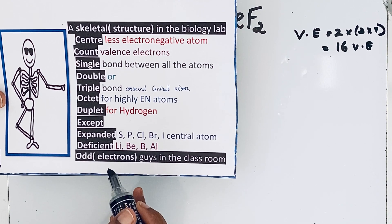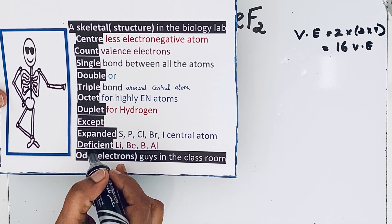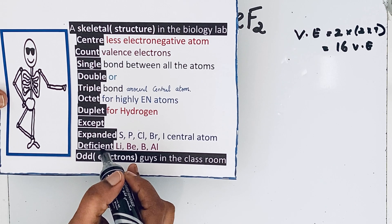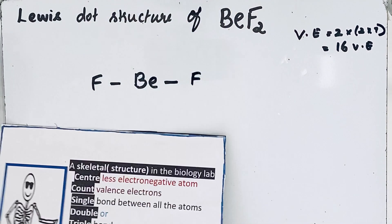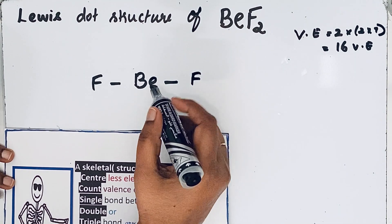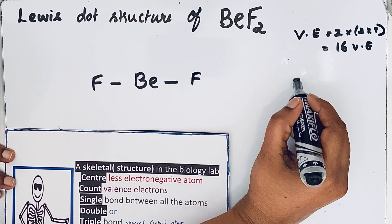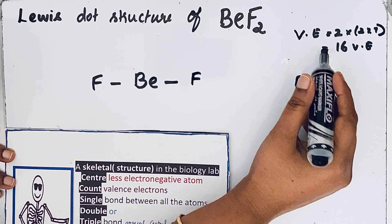Here you can see beryllium comes center deficient. It means for beryllium it is not necessary to have that octet configuration. So for that, first let us see that valence electrons of beryllium. Beryllium valence electrons 2.